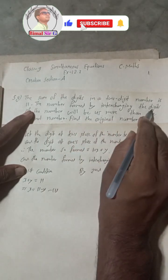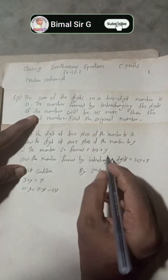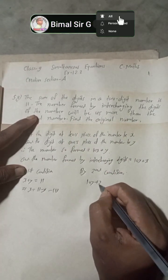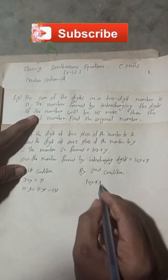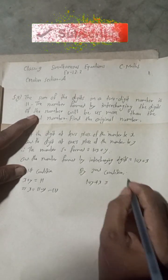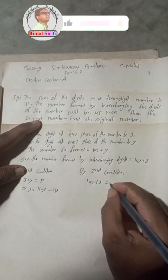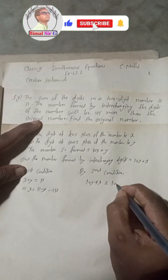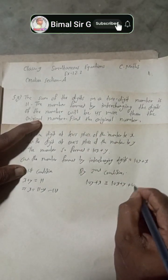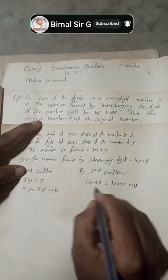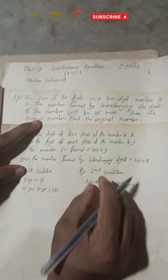By the second condition, the number formed by interchanging the digits — which is 10y plus x — will be 45 more than the original number. The original number is 10x plus y. So 45 more means we add 45 to the original number on the right side, giving us: 10y plus x equals 10x plus y plus 45.